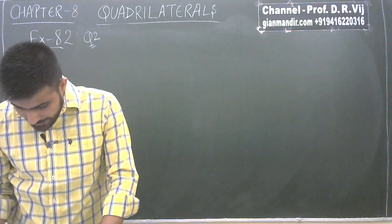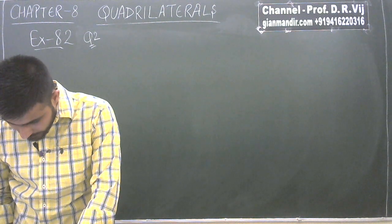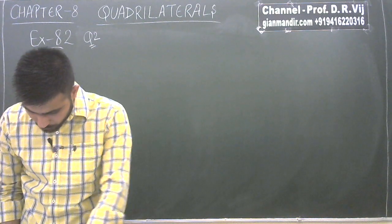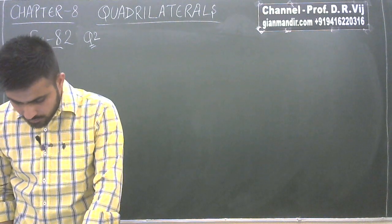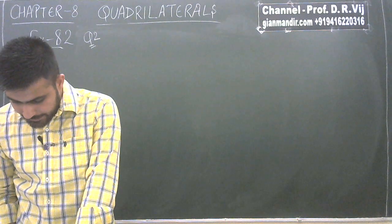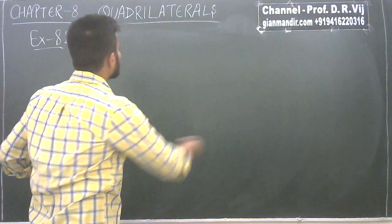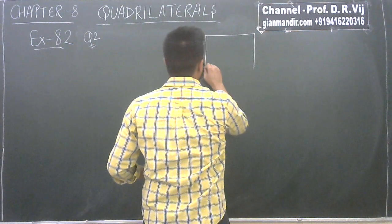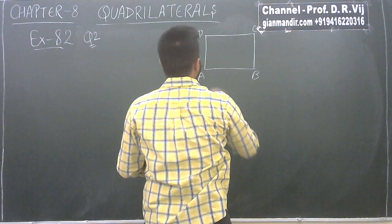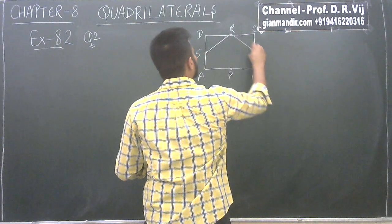Question number 2 says: ABCD is a rectangle and P, Q, R, S are midpoints of sides AB, BC, CD and DA respectively. Show that quadrilateral PQRS is a rhombus. We have to prove that. P, Q, R, S are the midpoints of sides AB, BC, CD and DA respectively. Show that quadrilateral PQRS is a rectangle — actually, we are given a rhombus and have to prove it is a rectangle. So let's draw the figure: quadrilateral ABCD with midpoints P, Q, R, S. We have to prove PQRS is a rectangle.